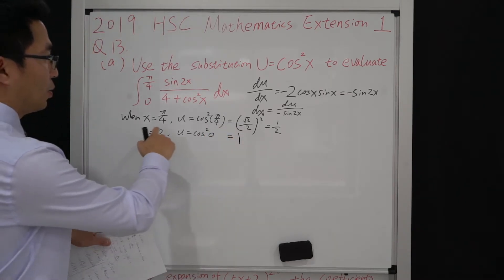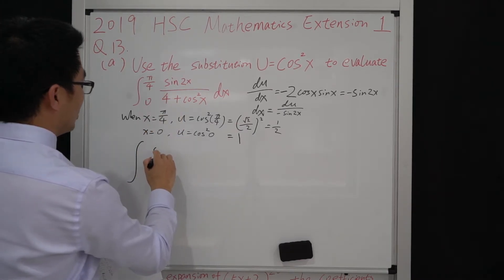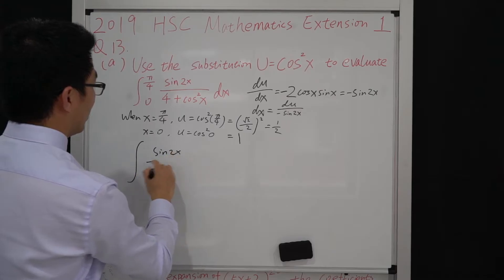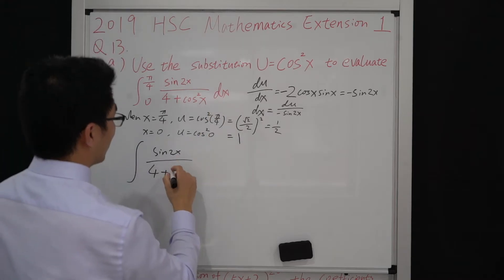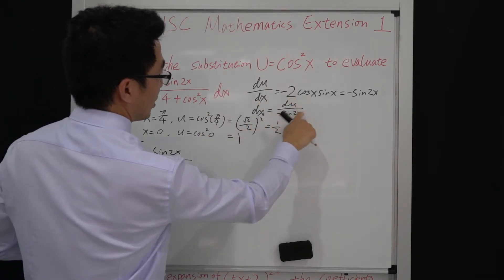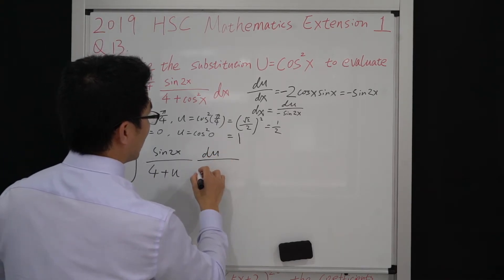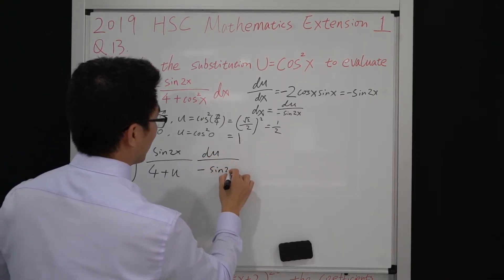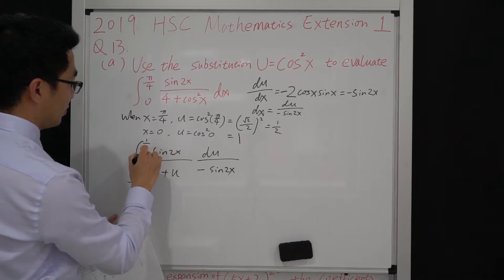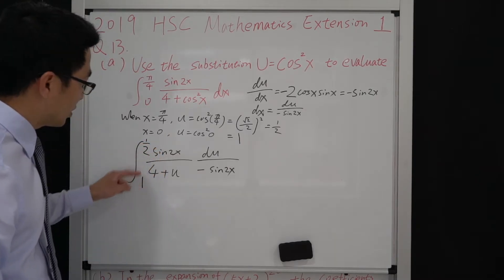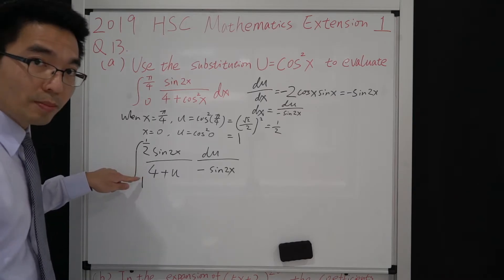Under this substitution, we are integrating sin 2x over (4 + cos²x), where cos²x equals u, and replacing dx with du over negative sin 2x. The interval is from 1 to 1/2. Make sure your order matches this interval — don't flip it over. It's not always from a small number to a bigger number.